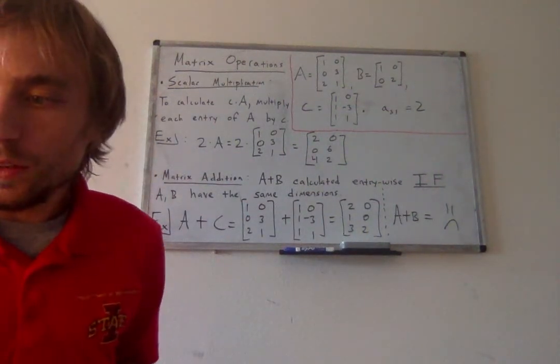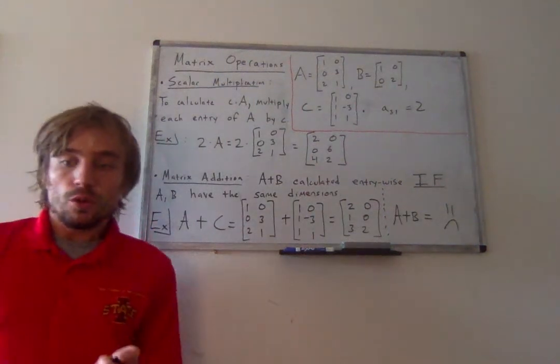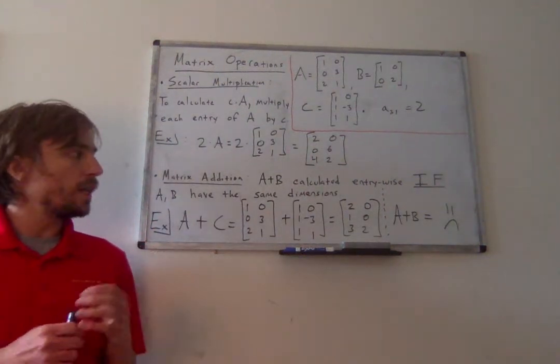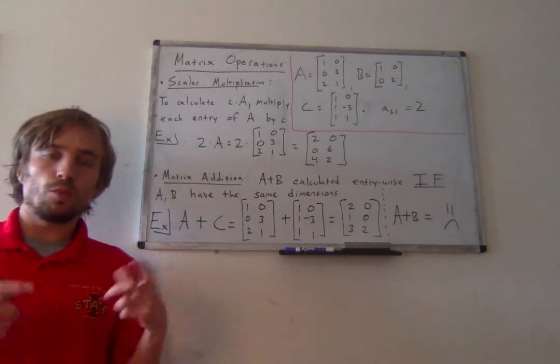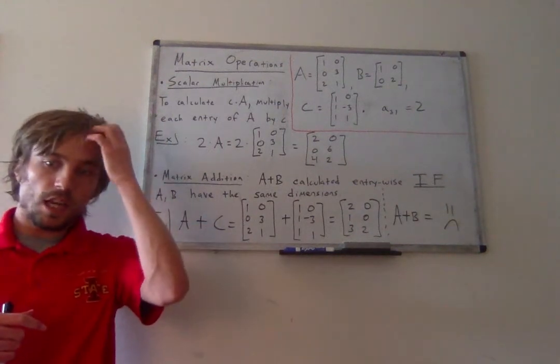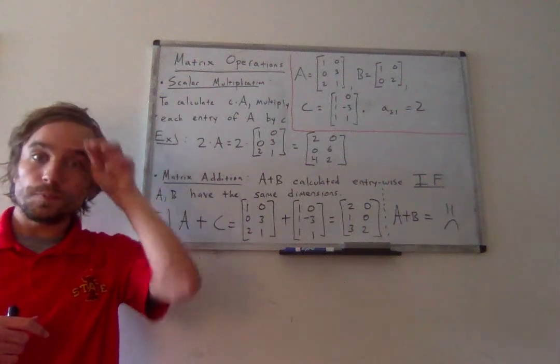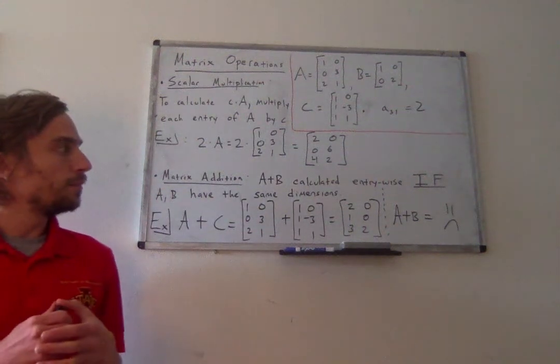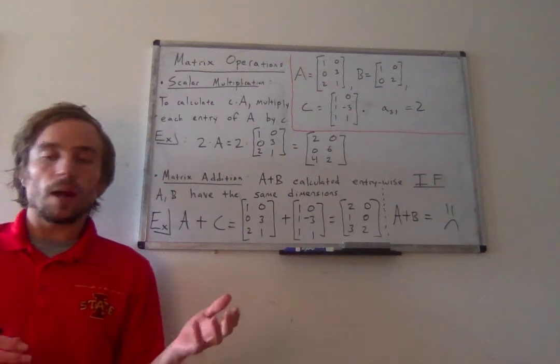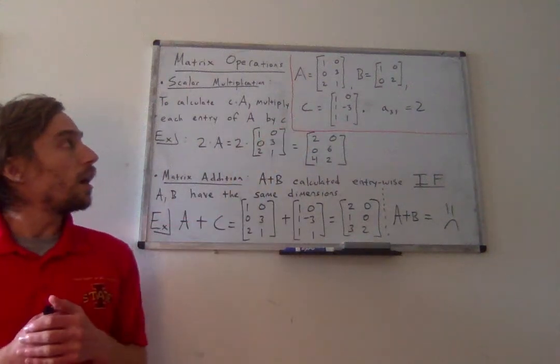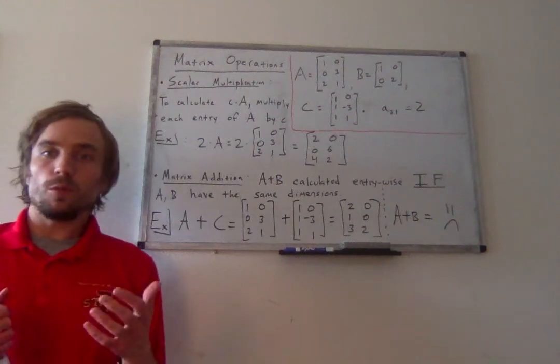All right, so there's really not much else to do. We can also perform, I'll give one more sort of quick example of like sort of a more intricate type of matrix operation we can do. But other than that, I'm just going to state—actually, maybe I'll state some properties and then we'll do one more quick example, but then we'll be done.